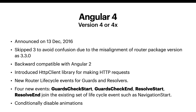Angular 4 was completely backward compatible with Angular 2. It included an HttpClient library for making API calls with HTTP requests. It also included new router lifecycle events for guards and resolvers, such as GuardCheckStart, GuardCheckEnd, ResolveStart, and ResolveEnd, as well as NavigationStart. There was also an option to disable animations based on conditions.